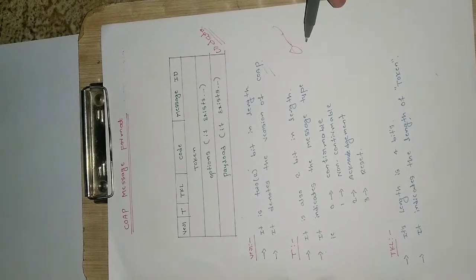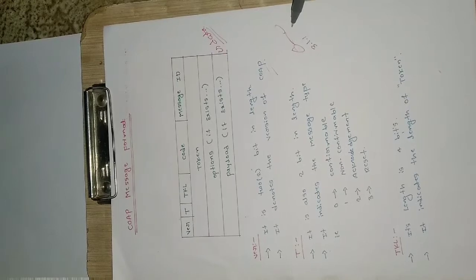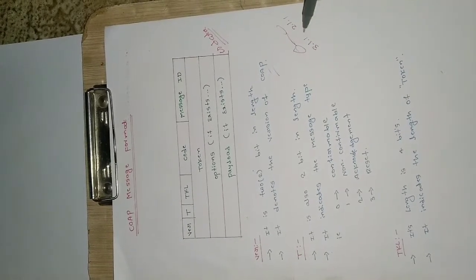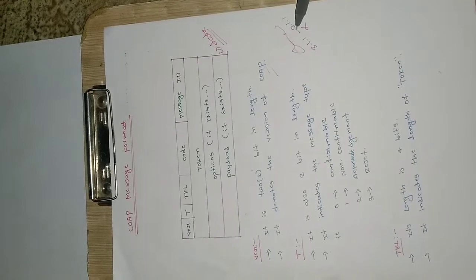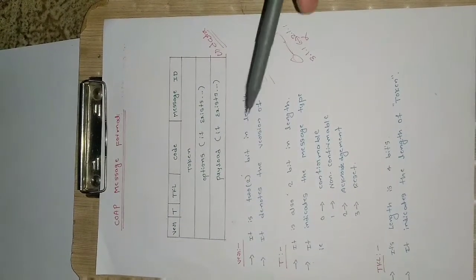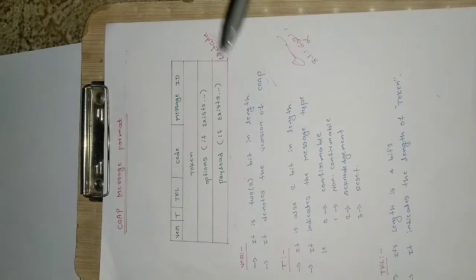If two devices are interacting with each other, it is very necessary that they use the same version. If one device is using 3.1.1 and the other is using 2.1.1, the connection will not happen and a version code error will occur. To avoid that, we should indicate the version of CoAP being used so that communication can happen. That is the significance of the version field.